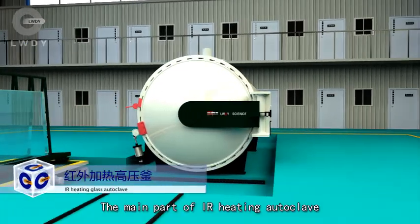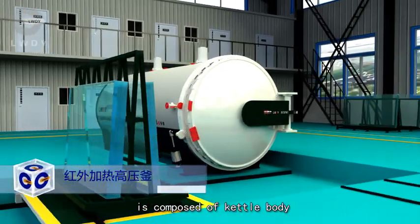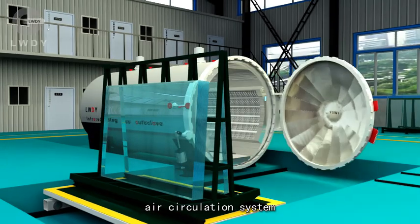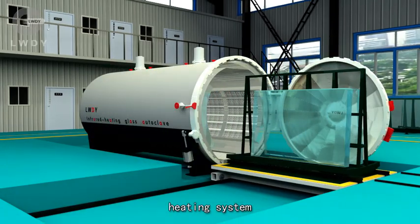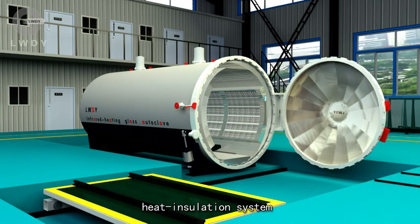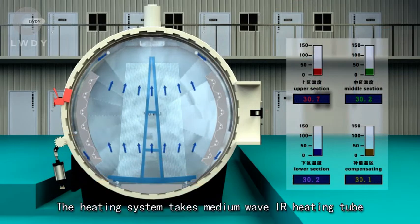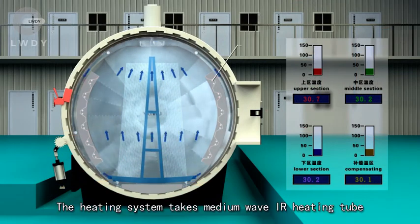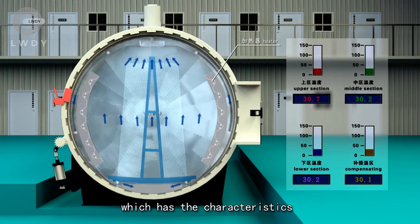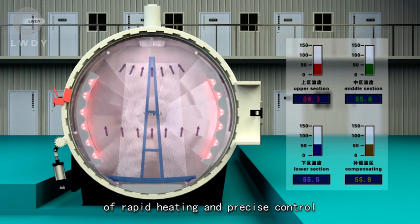The main part of IR heating autoclave is composed of autoclave body, air circulation system, cooling system, heating system, heat insulation system, and the safety interlock device of the autoclave door. The heating system takes medium wave IR heating tool, which has the characteristics of rapid heating and precise control.